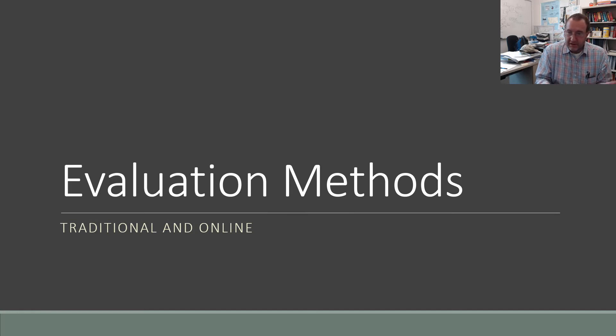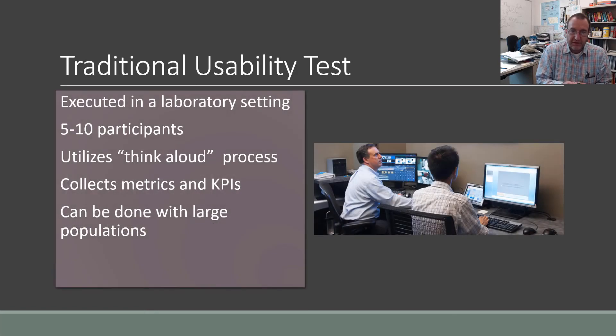How do we determine whether our users are happy or not? Well we actually do the official test. A traditional usability test looks something like the picture here where somebody sits down and tries to accomplish some tasks that you ask them to do. It can be executed in a lab or it can be in a classroom or at home.